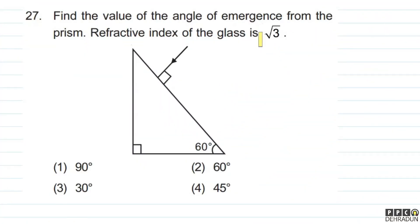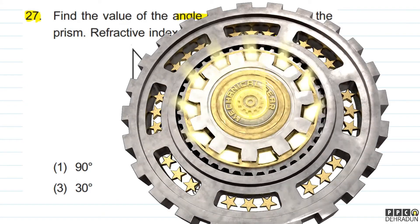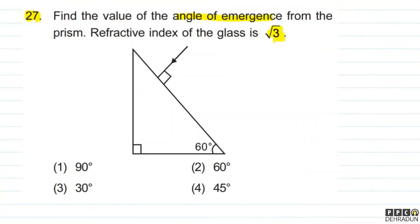Let's have a look at question number 27. The question says: find the value of the angle of emergence from the prism; refractive index of the glass is root 3. Here we can see that the angle of incidence is 0°, so when the ray enters there will be no deviation, and the angle of refraction will also be 0°.